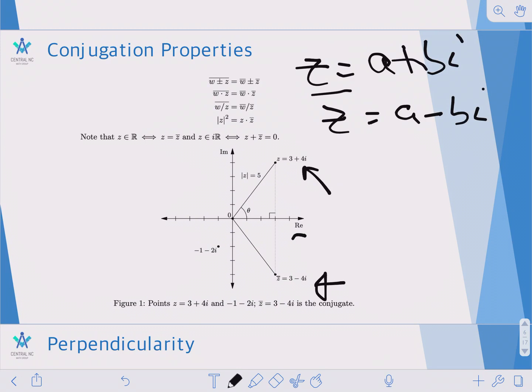If w and z are different complex numbers, then these following statements hold. Essentially, conjugation acts very nicely with addition, subtraction, multiplication, and division. You can just take the conjugation and put it onto each of those complex numbers.